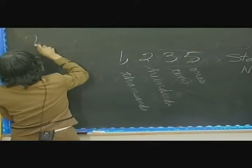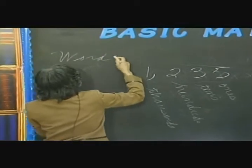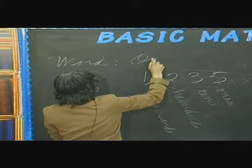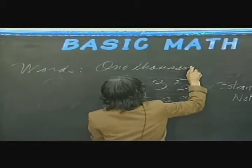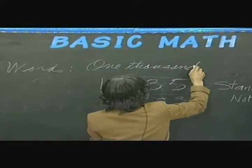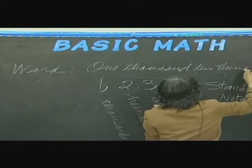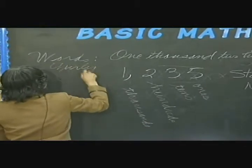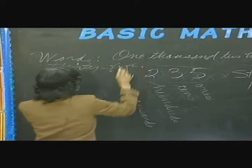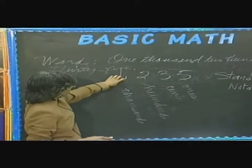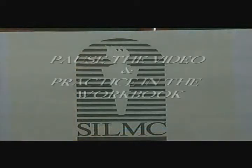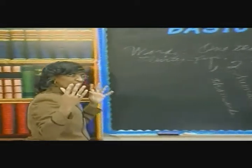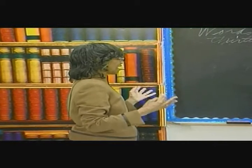And now let's look at the words. The words for this number would be one thousand, two hundred thirty-five. This is the standard notation for the number and the words. And now we need to look at the structure for large numbers, so we can see just how it's set up.